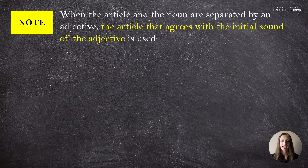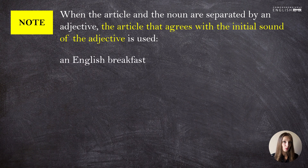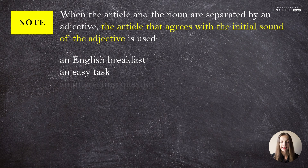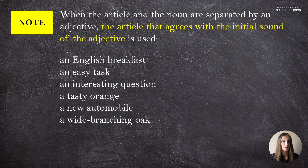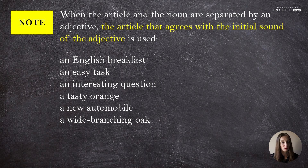Please note that when the article and the noun are separated by an adjective, the article agrees with the initial sound of the adjective. That's why we say 'an English breakfast,' 'an easy task,' 'an interesting question' — but 'a tasty orange,' 'a new automobile,' 'a wide-branching oak.' Though the nouns breakfast, task, and question start with consonant sounds, the adjectives that precede them start with vowel sounds, so we agree our article with that first sound that follows it.